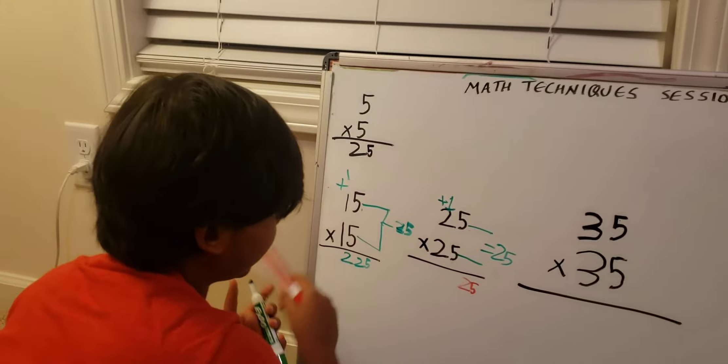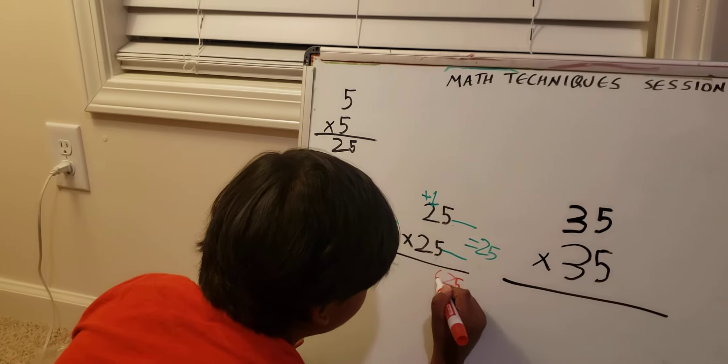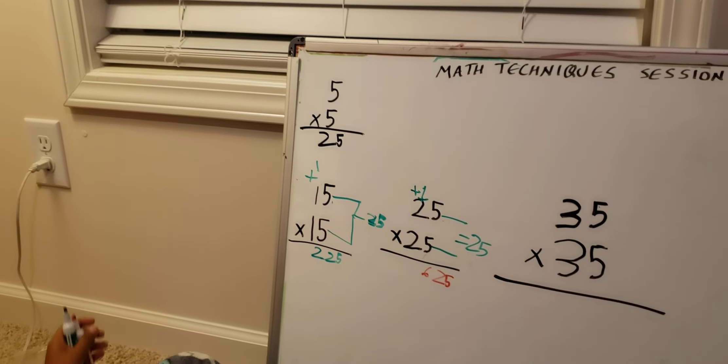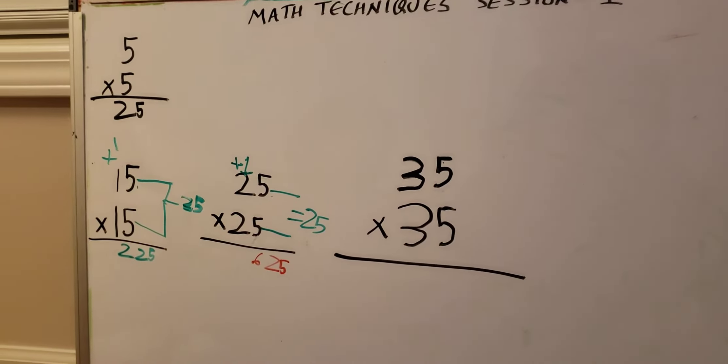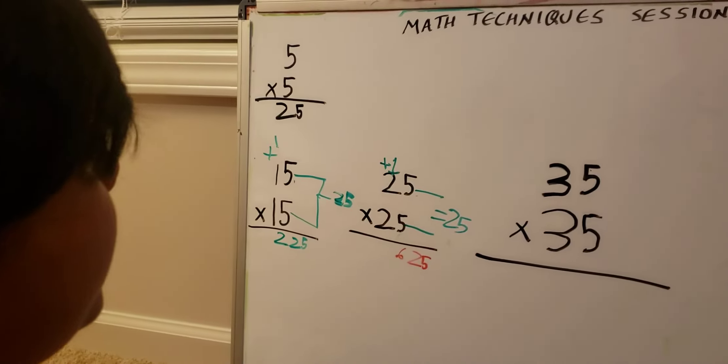Same thing as 35 times 35, but instead you need to multiply 3 times something.